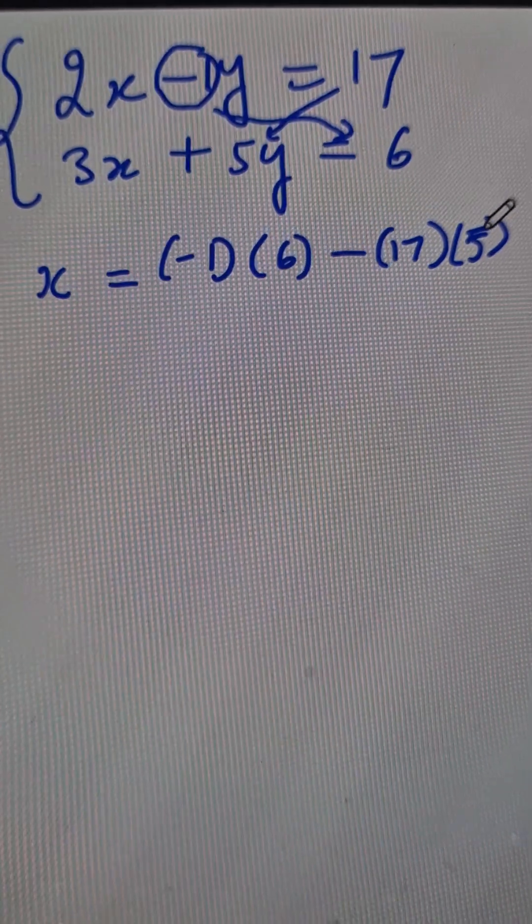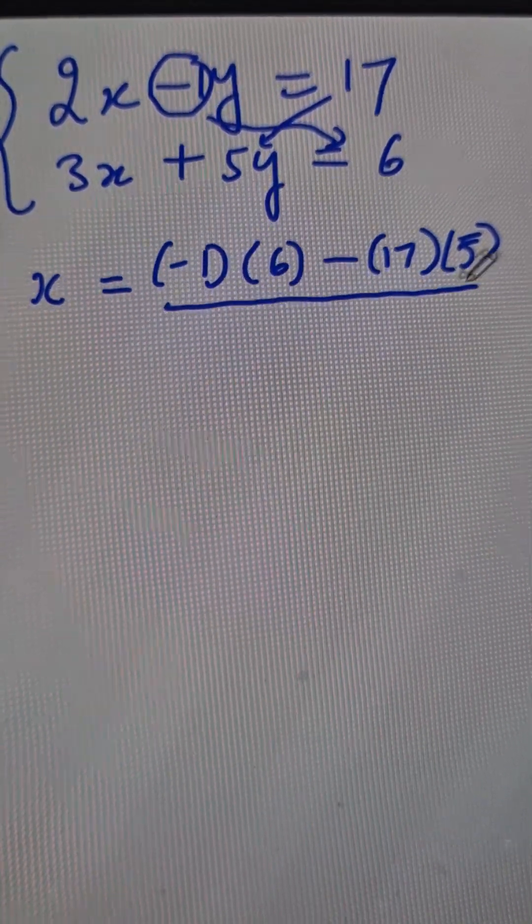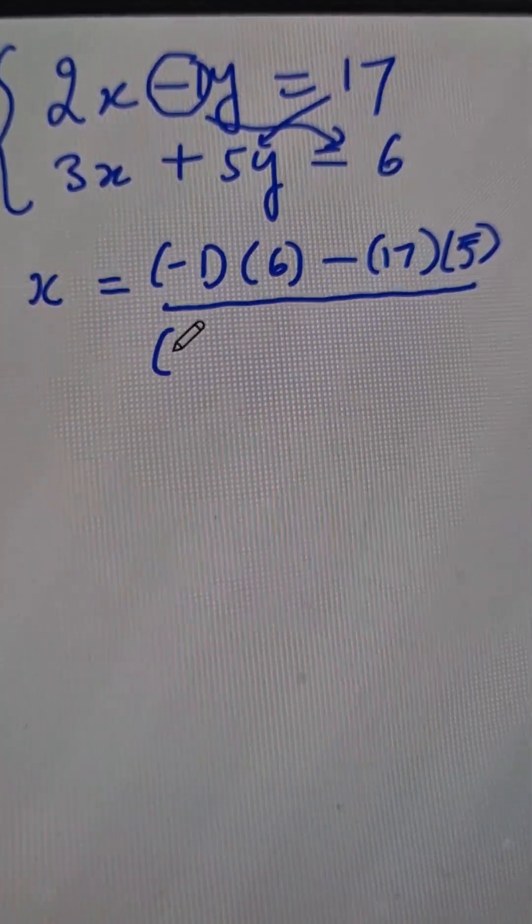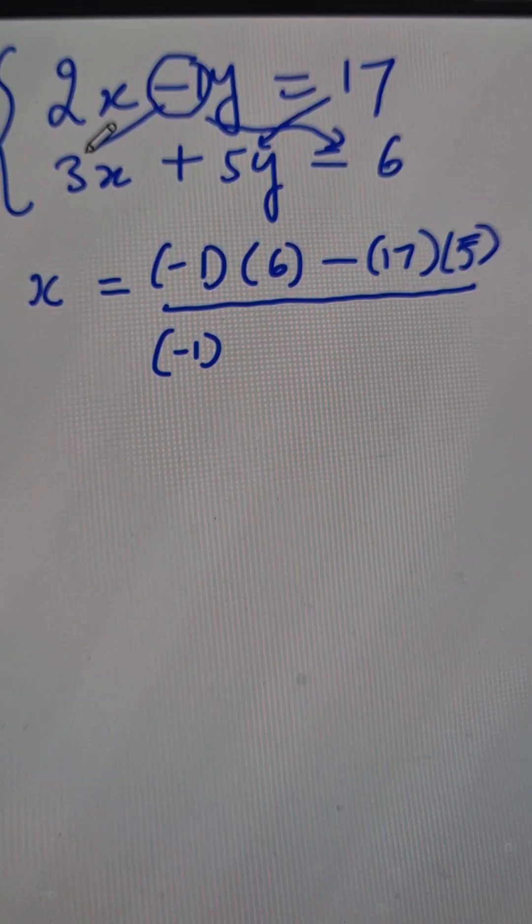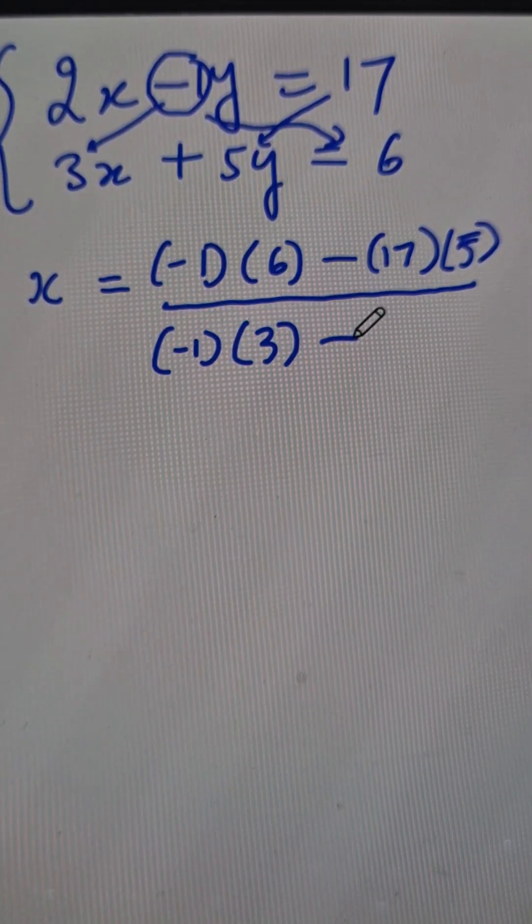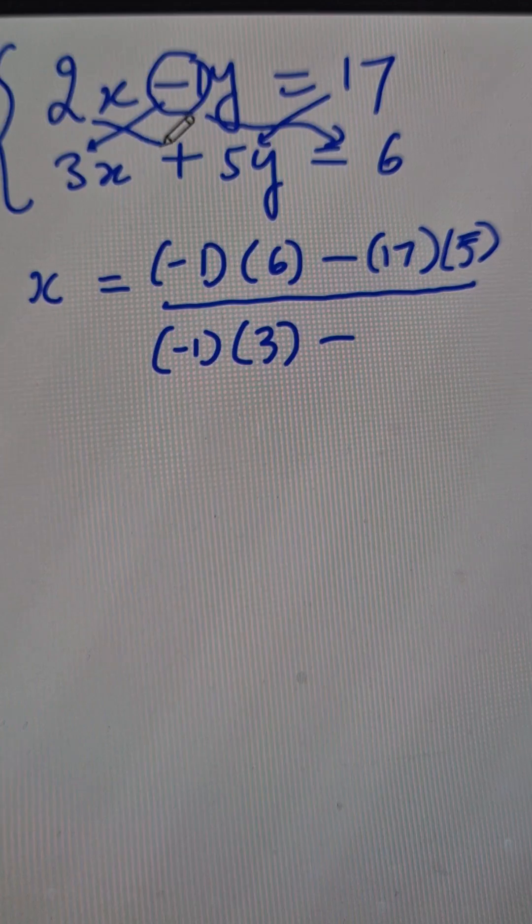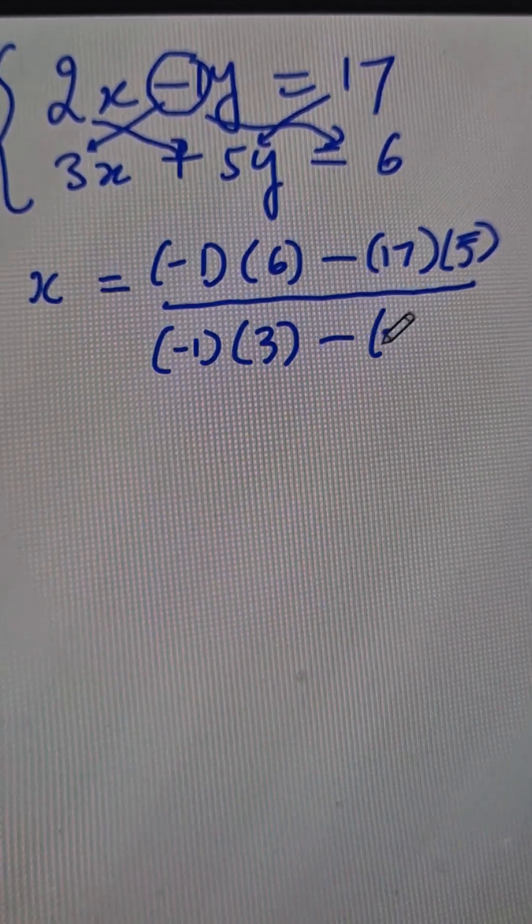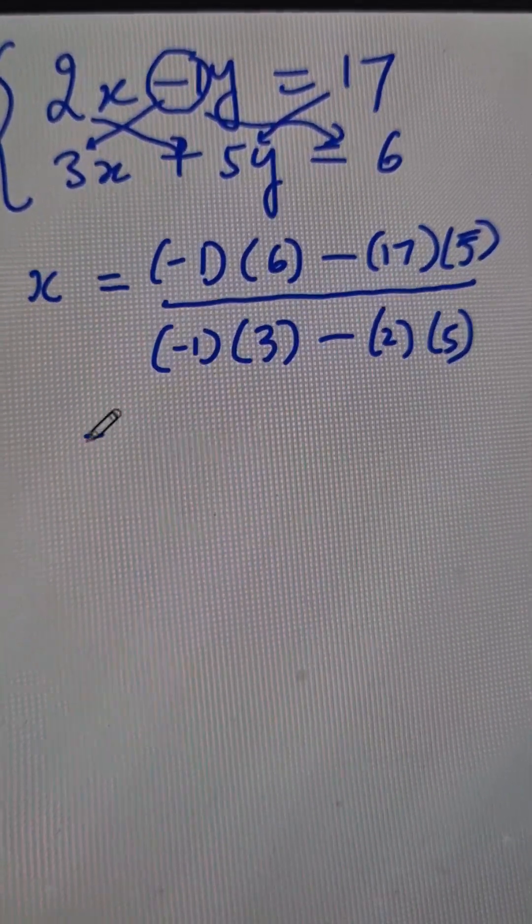Now, this is the numerator and in the denominator start with the negative 1 again and go on the other side, cross multiply it by 3, then put a minus sign and then go the other way round, 2 times 5, and you will see what happens here.